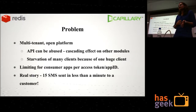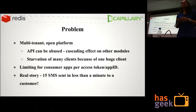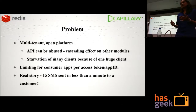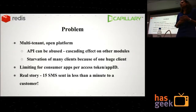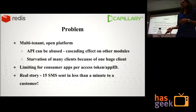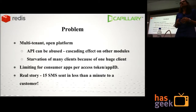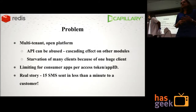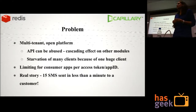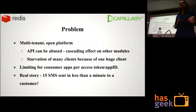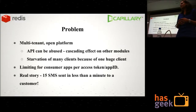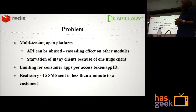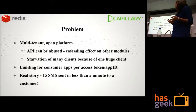There are common concerns that everyone faces — your API can get abused, and if this happens there is a cascading effect on all your downstream modules. A very big client can hog all your resources and other clients might starve. Also, a lot of communication happens with consumers. There was an incident where a bug caused us to send 15 messages to the same customer in less than a minute, so there definitely needs to be a mechanism to control such things.